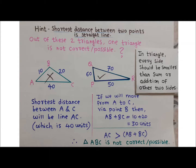In triangle PQR: PR < PQ + QR, QR < QP + PR, and PQ < PR + RQ — all conditions are satisfied. But in triangle ABC, side AC is greater than AB + BC, hence triangle ABC is not possible. The important rule is: in any triangle, every side must be smaller than the sum of the other two sides.